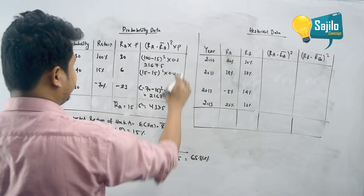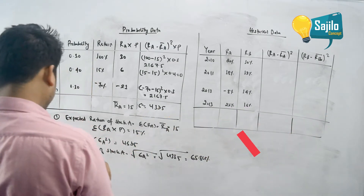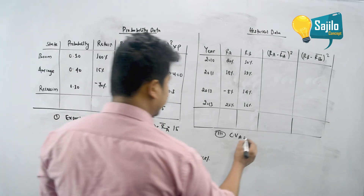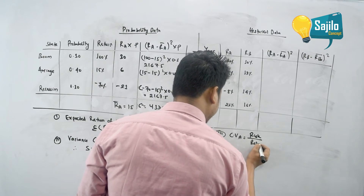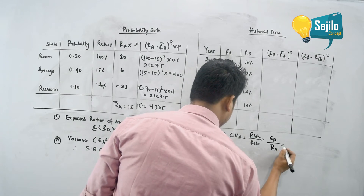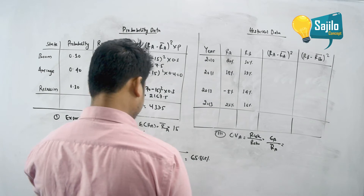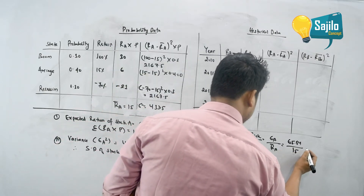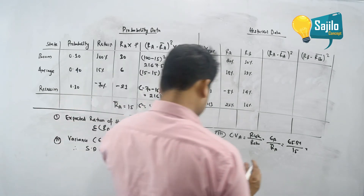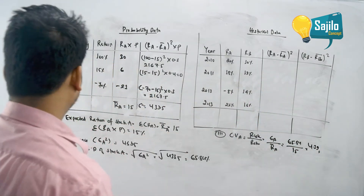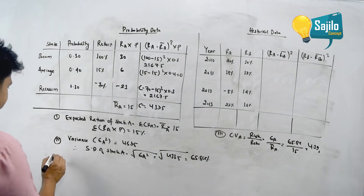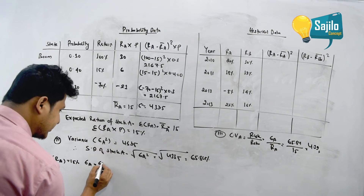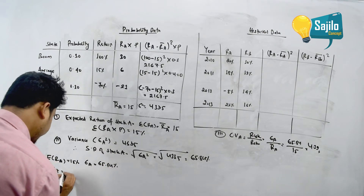The formula used is R_A minus R_A-bar squared into P. The standard deviation is 65.84 percent. The coefficient of variation CV of A equals standard deviation divided by return: 65.84 divided by 15 equals 4.39. Summary: expected return R_A equals 15 percent, sigma_A equals 65.84 percent, CV equals 4.39.